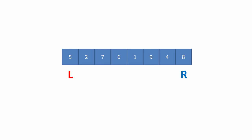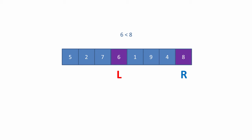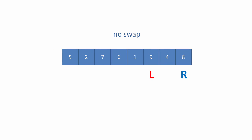To begin with, the left pointer is advancing towards the right pointer. We see that five is less than eight, so there's no need to do a swap — we simply advance the left pointer. Two is less than eight, so again no swap, we just advance the left pointer. Seven is less than eight, no swap, just advance the pointer. Six is less than eight, same again. And one is less than eight, nothing to do except advance the pointer.